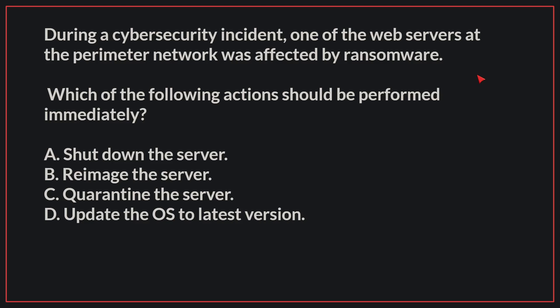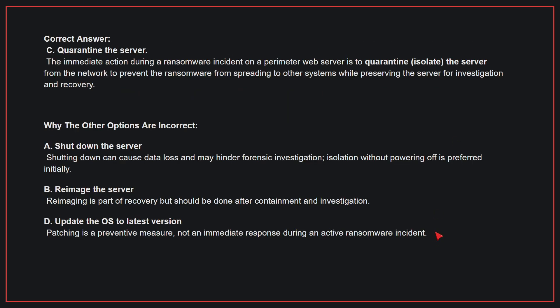During a cybersecurity incident, one of the web servers at the perimeter network was affected by ransomware. Which of the following actions should be performed immediately? The correct answer is C. Quarantine the server. The immediate action during a ransomware incident on a perimeter web server is to quarantine the server from the network to prevent the ransomware from spreading to other systems, while preserving the server for investigation and recovery.